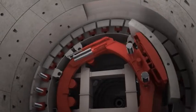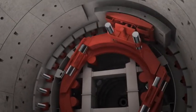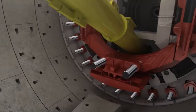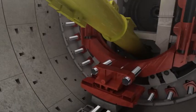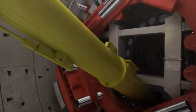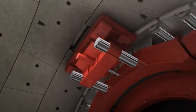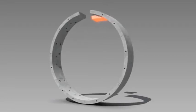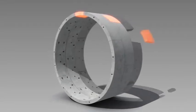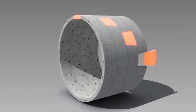The erector takes each of the segments from the segment feeder and places each one on its position until the last one, called key segment, which closes the ring and allows the TBM to commence another boring cycle. In this way, the TBM installs one ring after another, allowing the tunnel length to increase until the complete tunnel is finished.